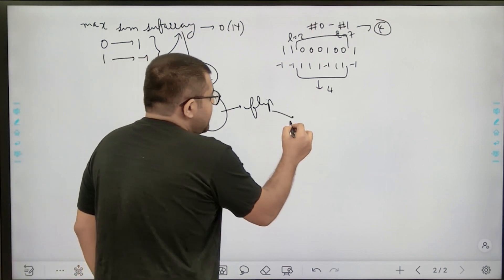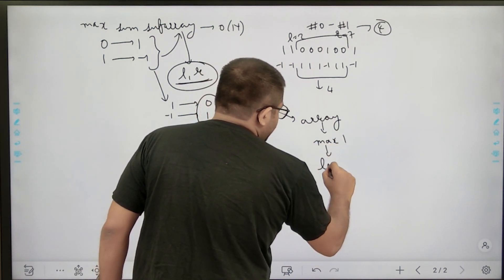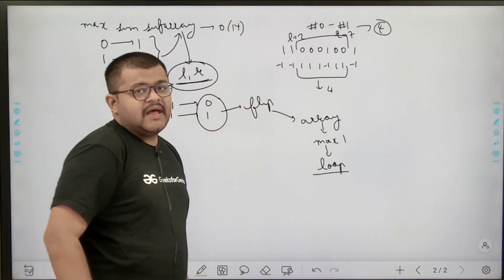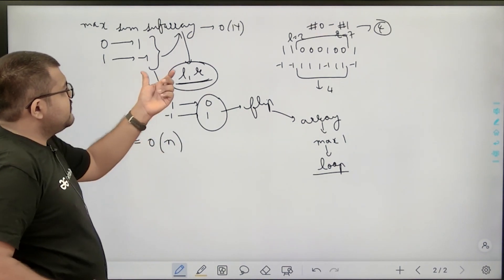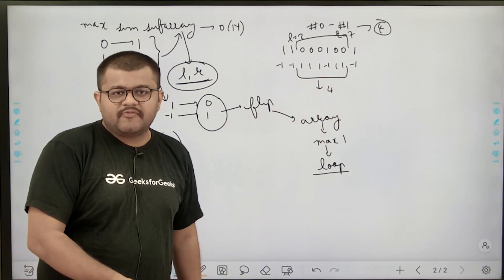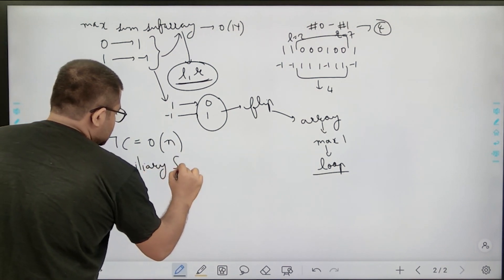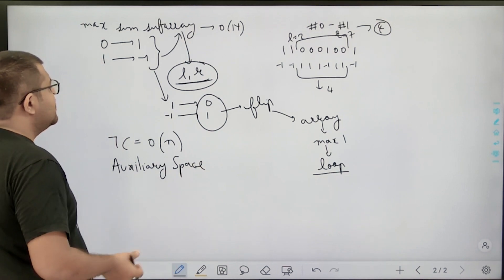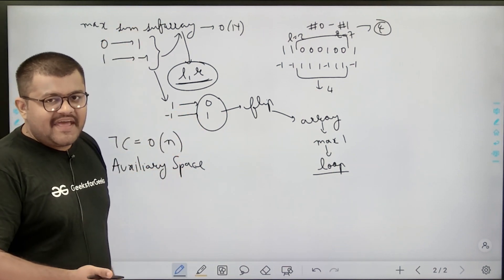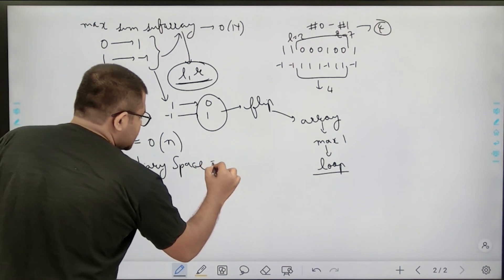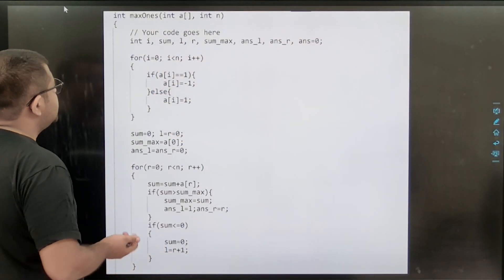After flipping from l to r, I now have an array with the maximum number of ones. I simply loop over the array, count the ones, and return that as the answer. The time complexity is O(n) because Kadane's algorithm runs in O(n), and the auxiliary space is O(1) since we only use a few variables and modify the original array in place.